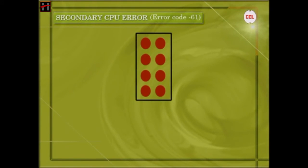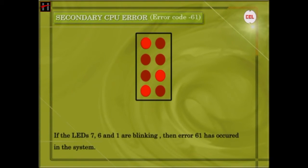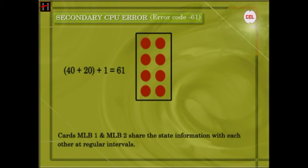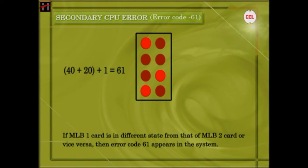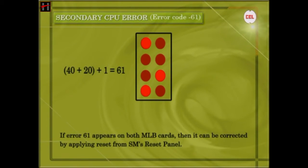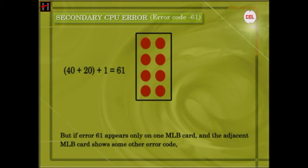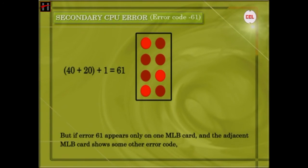Secondary CPU Error: If LEDs 7, 6, and 1 are blinking, then Error 61 has occurred. MLB1 and MLB2 cards share the state information with each other at regular intervals. If MLB1 card is in a different state from that of MLB2 card or vice versa, then Error 61 appears. If Error 61 appears on both MLB cards, it can be corrected by applying reset from the essence reset panel. But if Error 61 appears only on one MLB card and the adjacent MLB card shows some other error code, then the rectifications to be followed will be that of the error code on the adjacent MLB card.